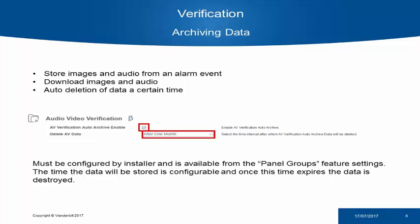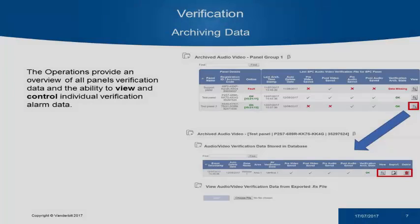Once this is enabled, you must also select a time period for the retention of your data — so after one month or after six months, if you wish, the data will be destroyed. Once this is configured, the data will be available for you to review. In each panel group, you will see all your panels and what data is available for them. For each panel, we can drill down and see the individual alarms.